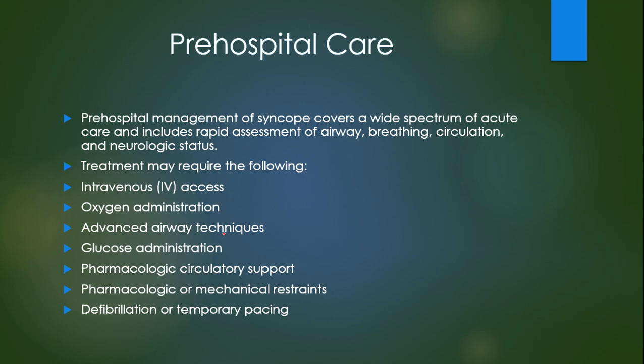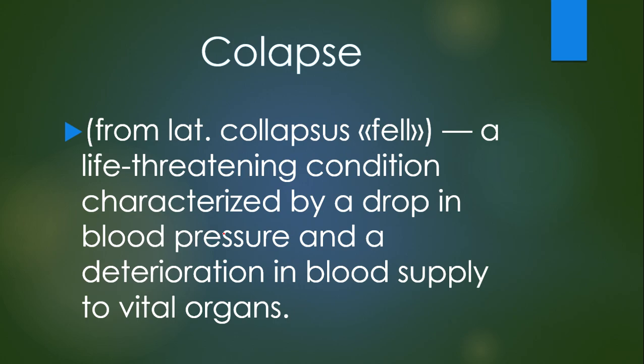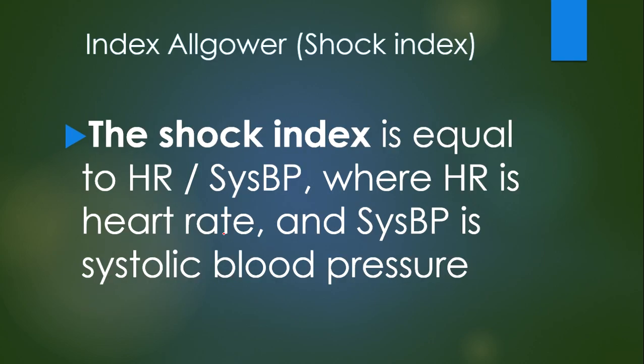Collapse — from Latin 'collapsus' meaning 'fell' — is a life-threatening condition characterized by a drop in blood pressure and deterioration of blood supply to vital organs. An important index is the shock index (also called Allgöwer index): shock index equals heart rate divided by systolic blood pressure.